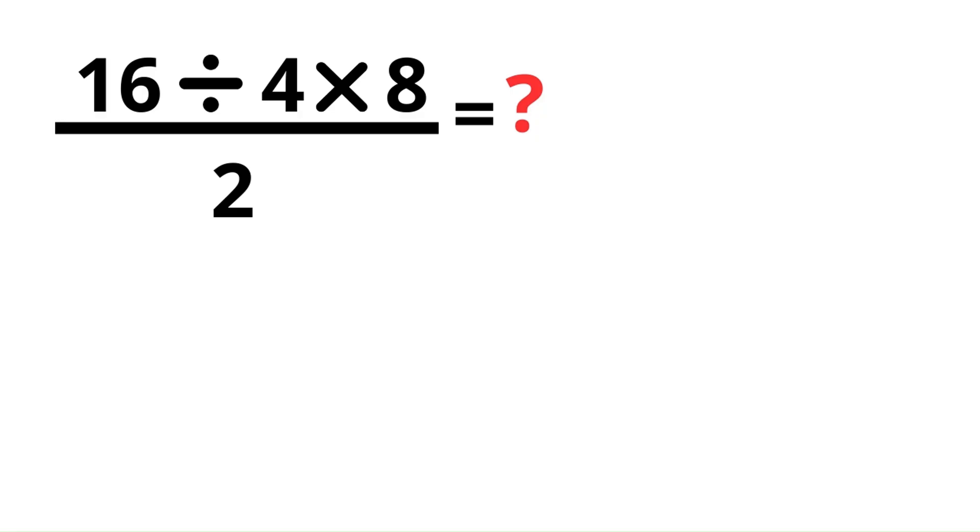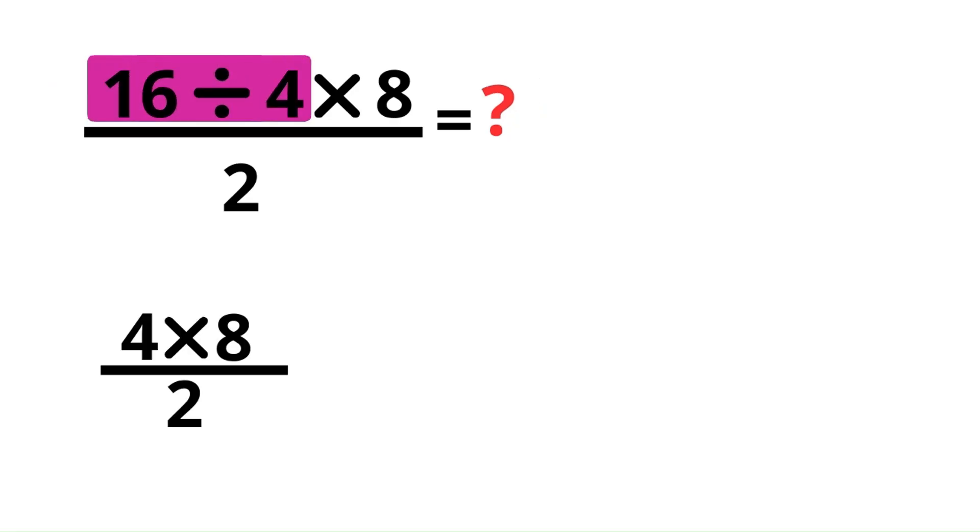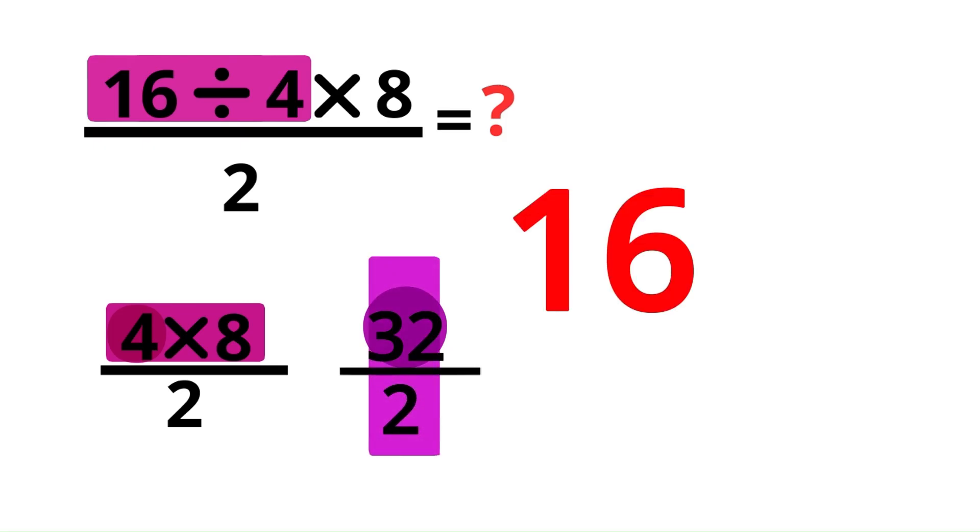Let's solve it step by step. First, 16 divided by 4 equals 4. Next, 4 times 8 equals 32. Finally, 32 divided by 2 equals 16. The correct final answer is 16.